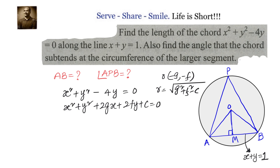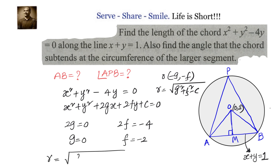Comparing with the given equation: there is no x term, so 2g = 0, giving g = 0; and 2f = -4, giving f = -2. Therefore, the centre O is at (-g, -f) = (0, 2). The radius is √(g² + f² - c) = √(0 + 4 - 0) = 2. So OA = 2.